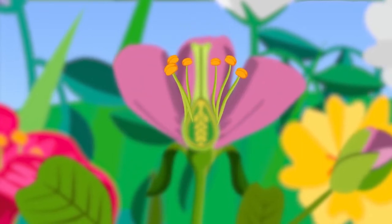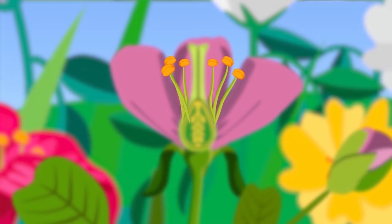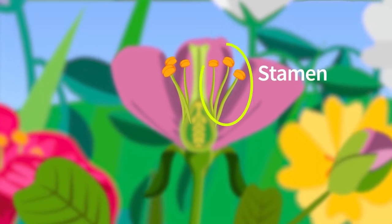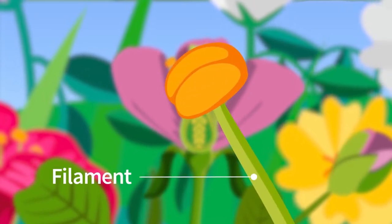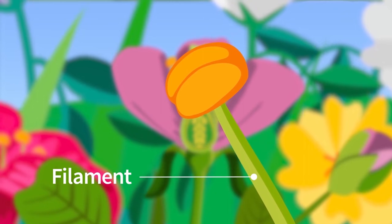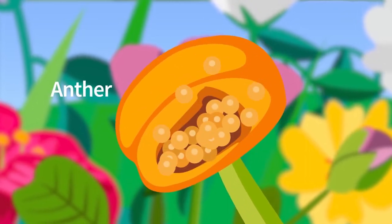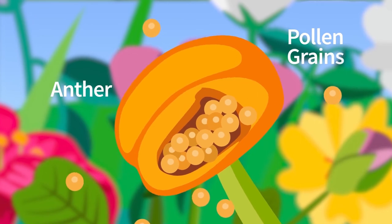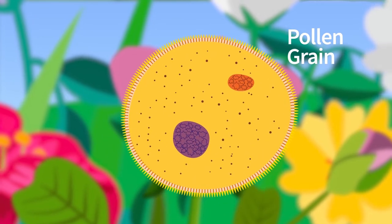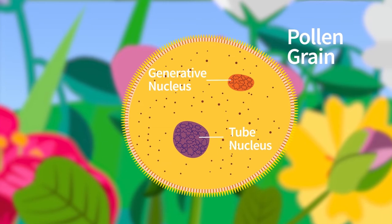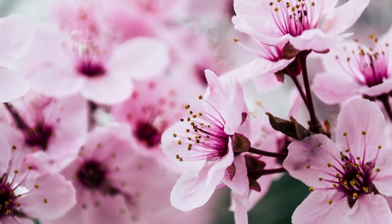The ovary produces the ovules. An ovule contains the female gamete — the egg cell — and the polar nuclei. The pistil is surrounded by the male reproductive organs of the plant, the stamens. A stamen consists of a long filament topped with a bulged part known as the anther. The anther is a sac that produces pollen grains. Each pollen grain is made up of a tube nucleus and a generative nucleus.